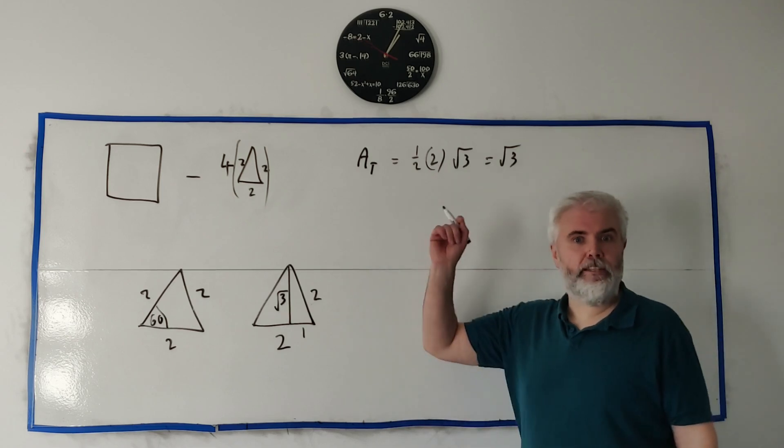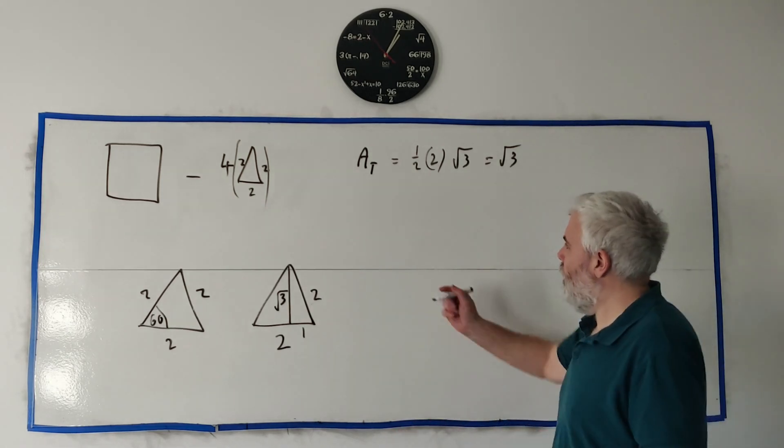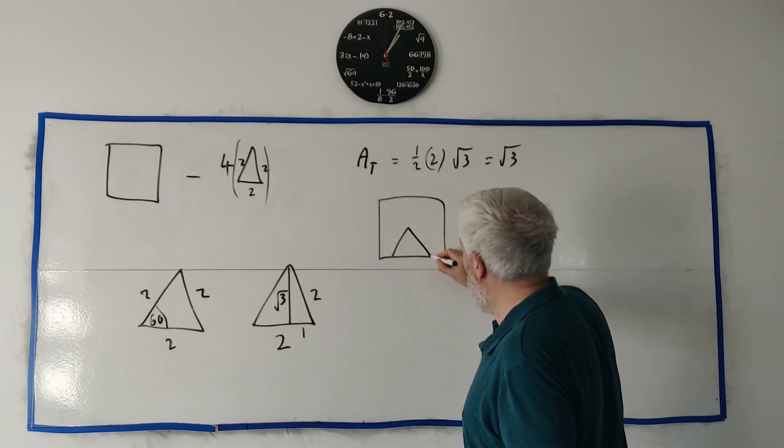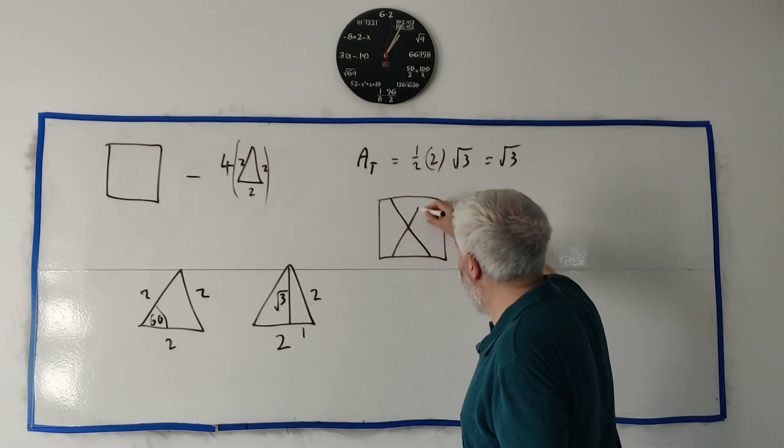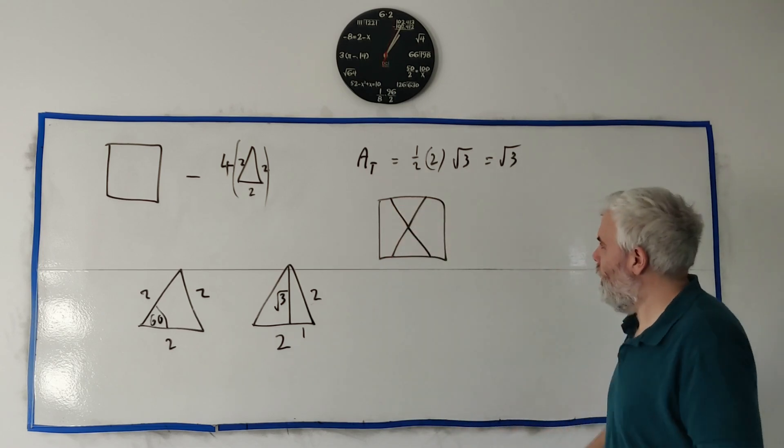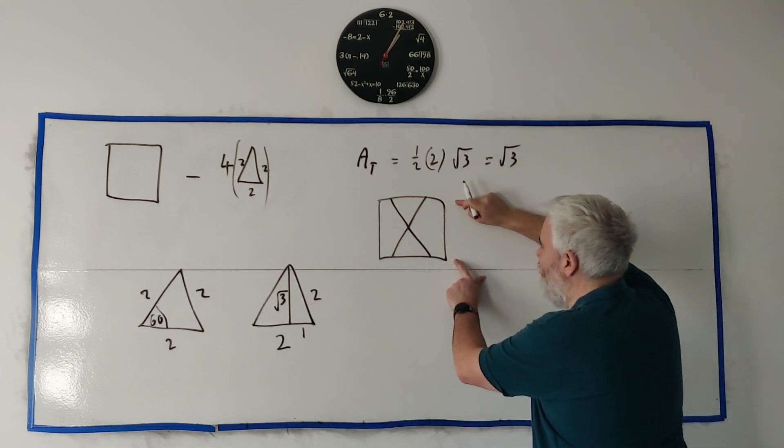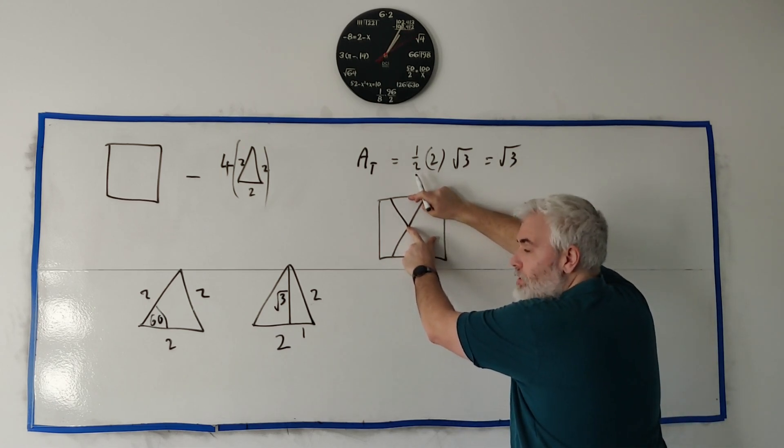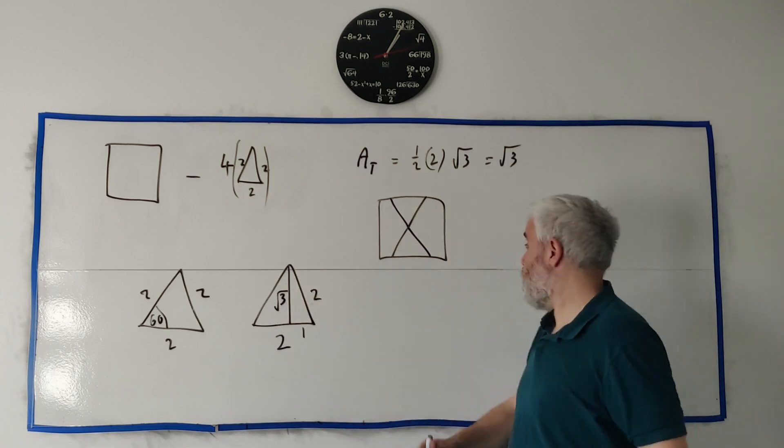Next up we need the area of the square. So we need the dimensions of it. Let's draw the square one more time. And remember we have a triangle like this and another one like that. So the height of this square is the same as the two of the heights of these triangles, and we just found out it's square root of three.